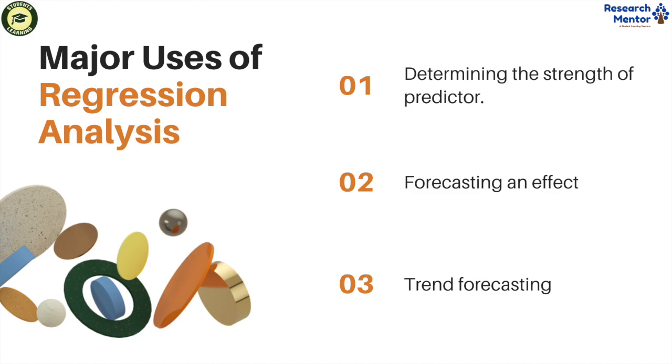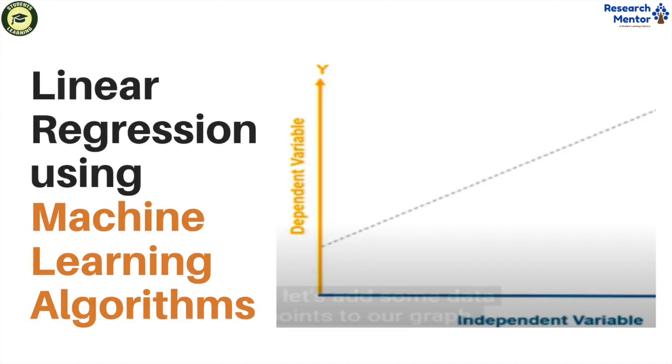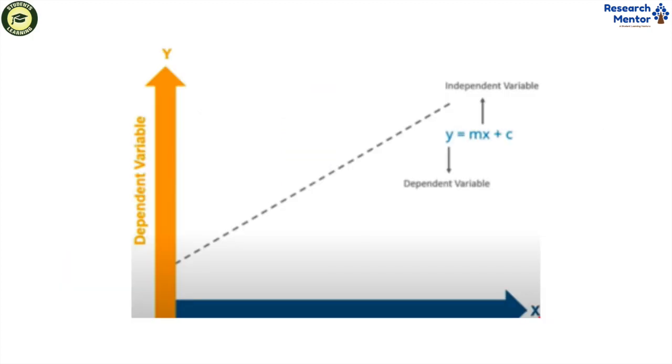Regression might be used to identify the strength of the effect that the independent variables have on the dependent variable. Now I am going to explain linear regression with algorithms. The x-axis belongs to independent variables and y-axis belongs to dependent variables.